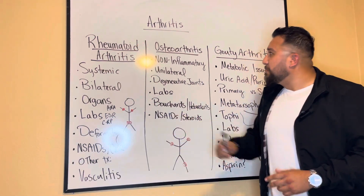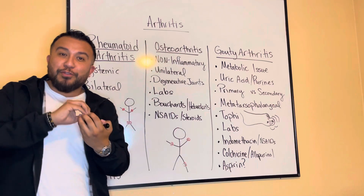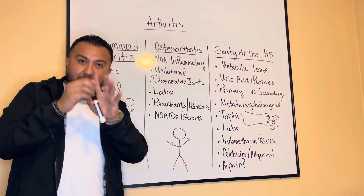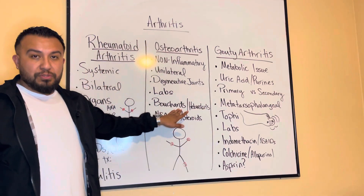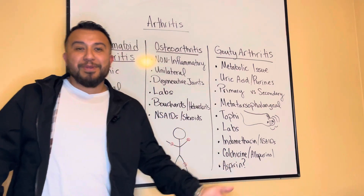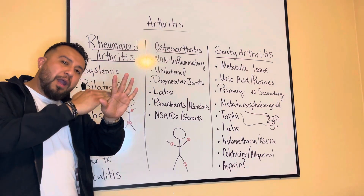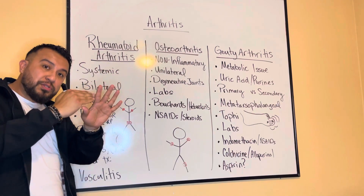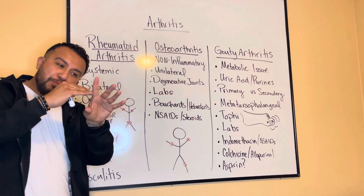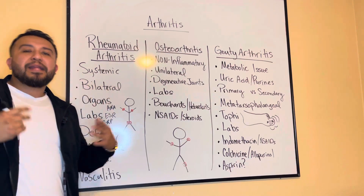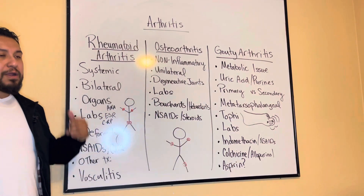The specific deformities in osteoarthritis develop because the articulating joints try to heal themselves but develop scar tissue on their surfaces. You'll see nodes on the fingers. When the proximal joint is deformed, we call those Bouchard's nodes. The proximal versus distal distinction helps with memorization: 'B' comes before 'H' in the alphabet, so Bouchard's nodes come before Heberden's nodes. Just remember that Bouchard's and Heberden's nodes are specific deformities for osteoarthritis, not rheumatoid arthritis.